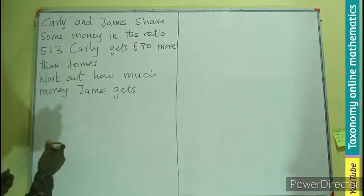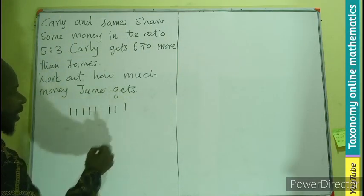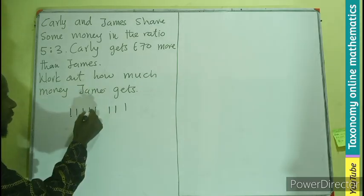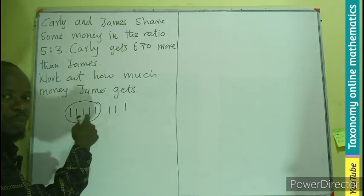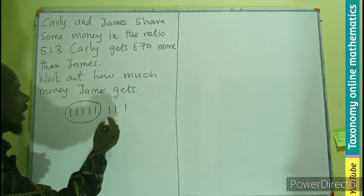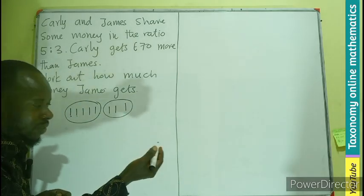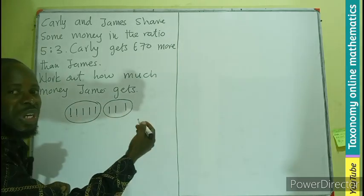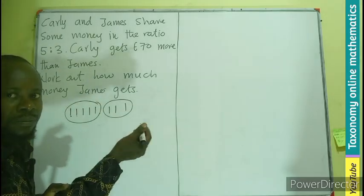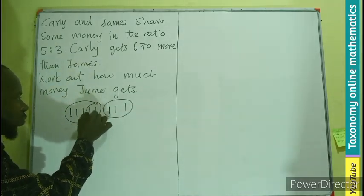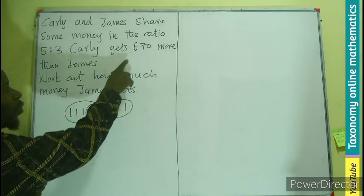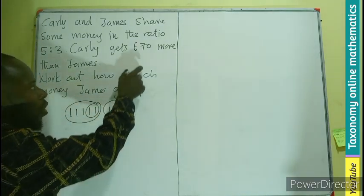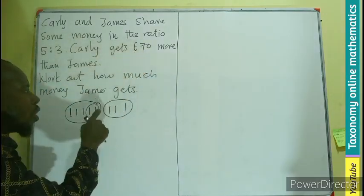So in this case, if we number the divisions 1 through 8, it means the amount in each division is the same. That is why if Kali is taking 5 parts — taking a multiple of that division — then James is also taking a multiple of that division. So the difference between their ratio parts, which is 2, accounts for the 70 pounds difference.